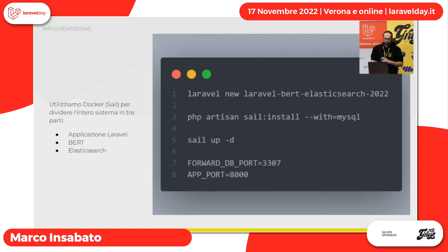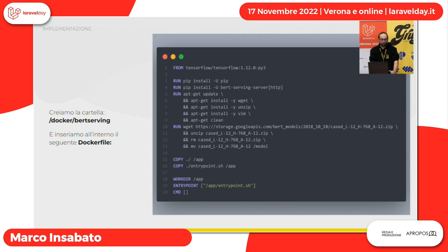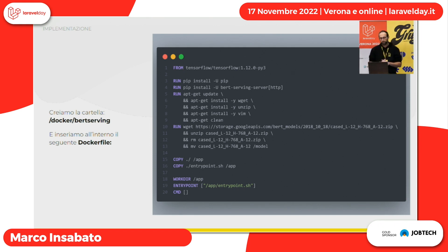Siamo partiti proprio dal base: 'laravel new'. Abbiamo utilizzato Sail per usare Composer all'interno di Laravel, abbastanza comodo. Abbiamo impostato le porte di MySQL e del server Laravel. Partiremo con BERT, poi con Elasticsearch, soltanto i container, vedremo se funzionano, poi li implementiamo dentro Laravel con dei servizi appositi e poi andiamo a costruire l'engine custom.